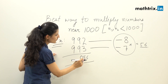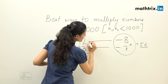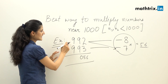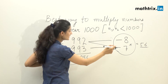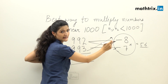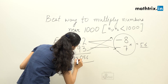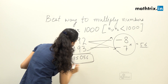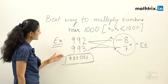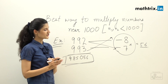Step number three: we do the cross addition. We can either add 992 to minus seven or 993 to minus eight, which gives us 985. So the answer for 992 multiplied by 993 is 9 lakh 85 thousand and 56.